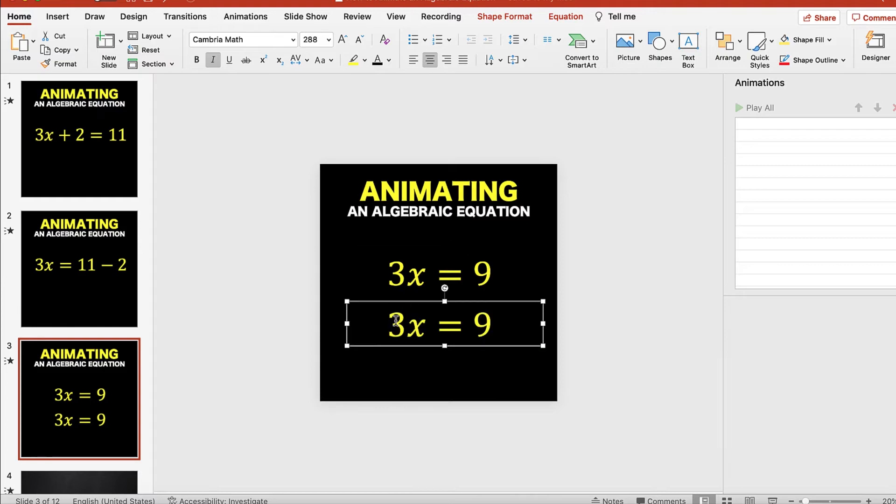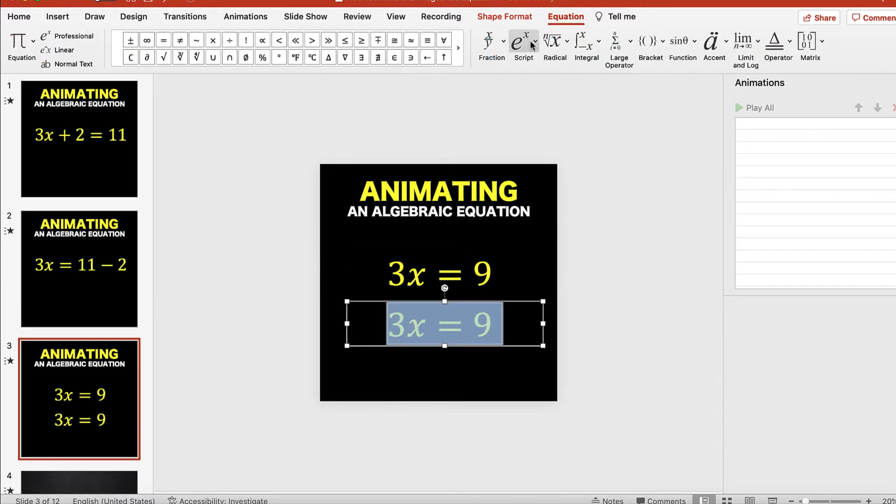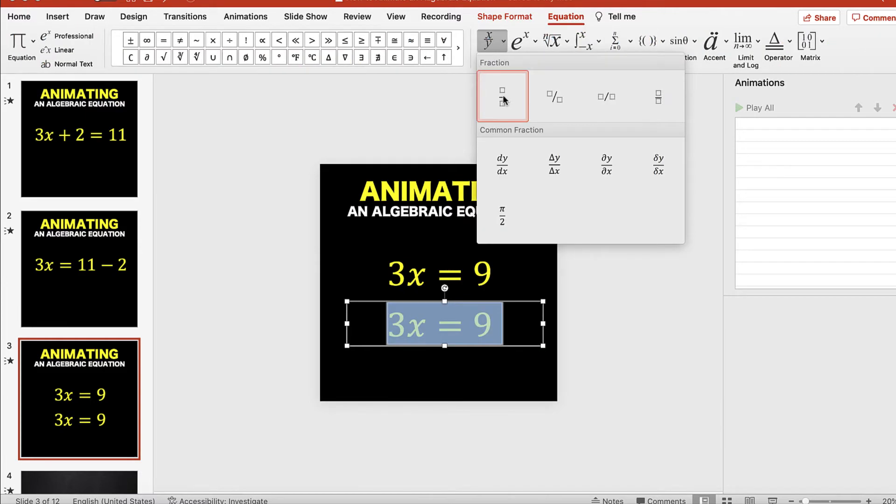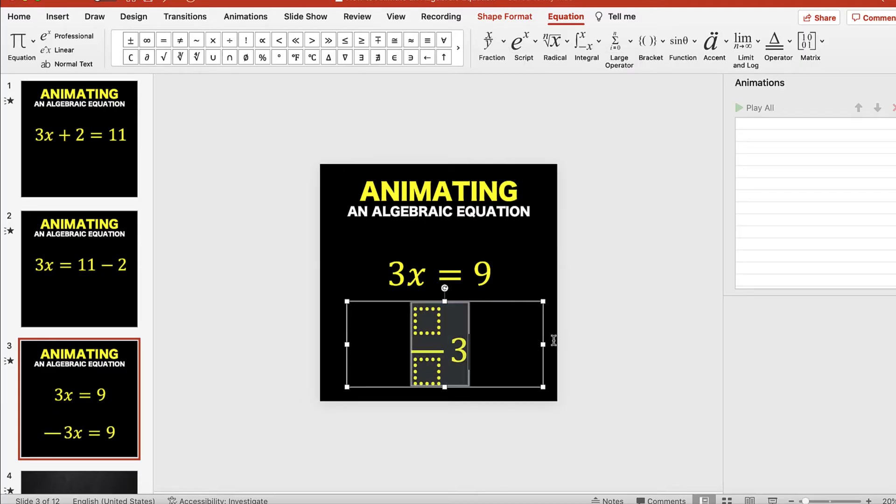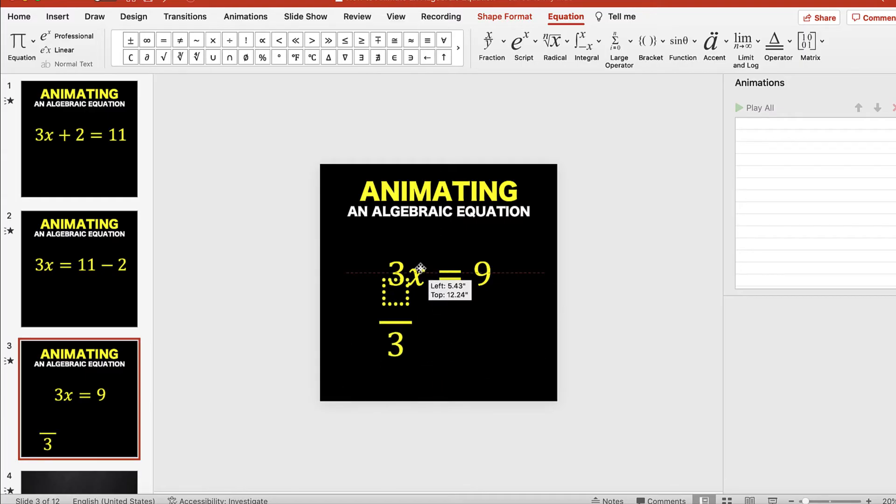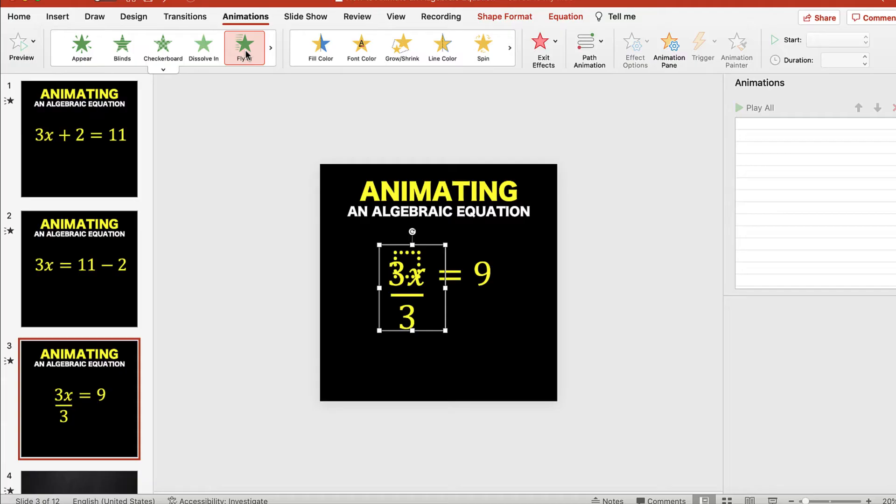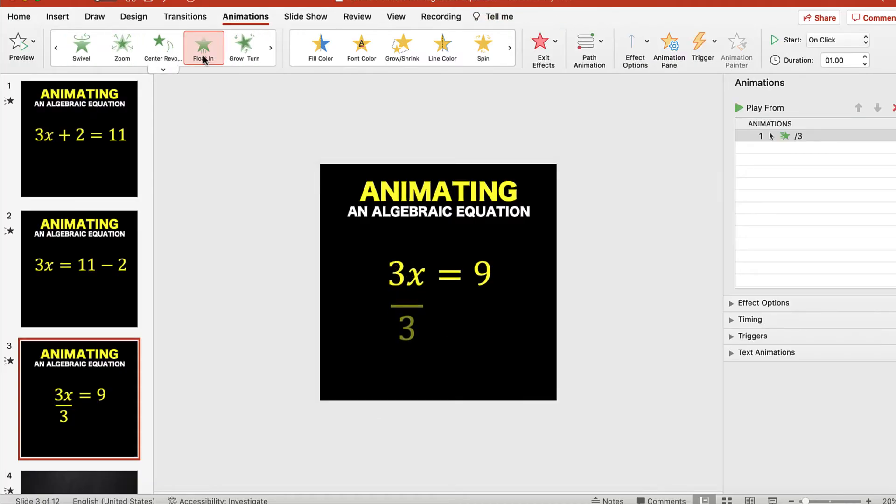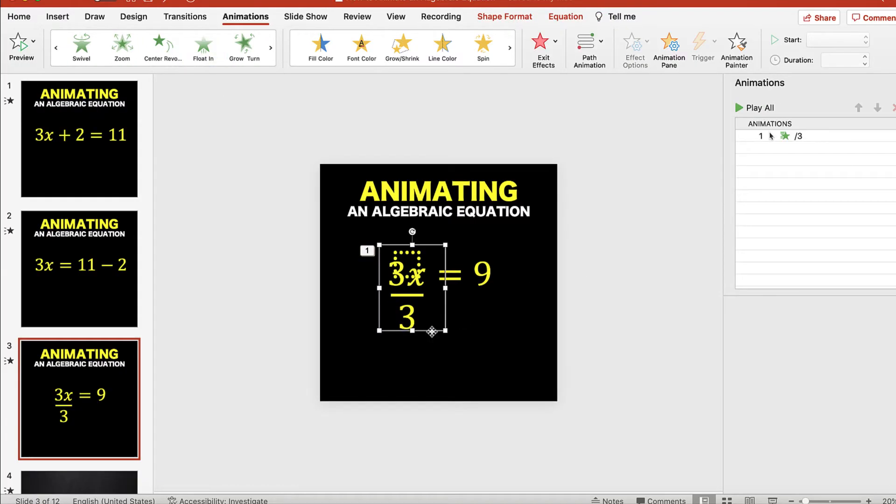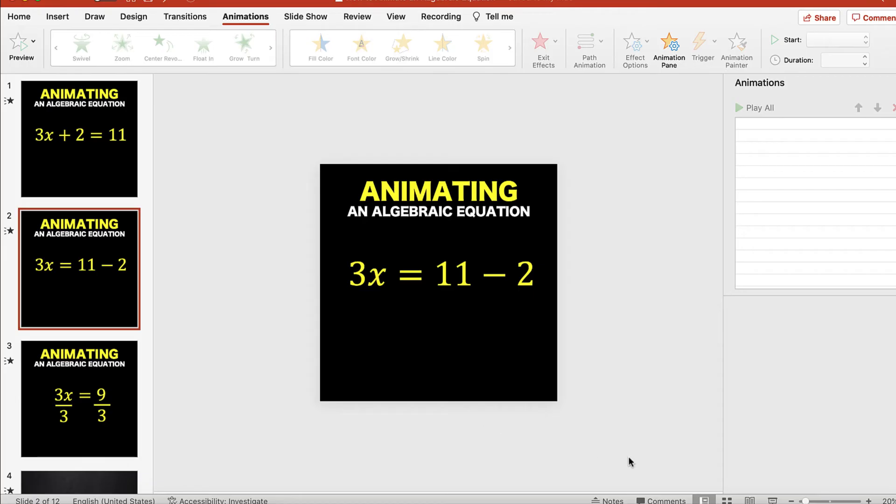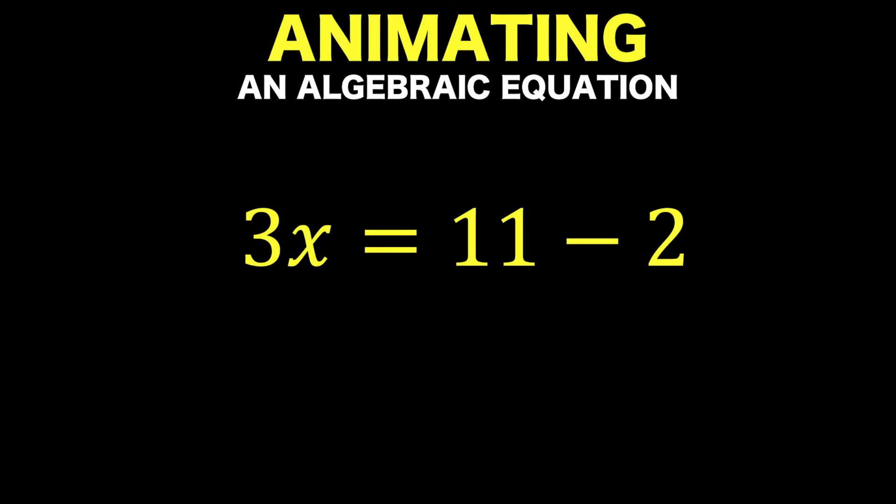Then the next step here is to divide both sides by 3. I duplicate this again, I copy, then I go to this equation. I want a fractional bar, so I selected this one. I'm going to divide by three both sides. I position that here and create some animation—let's say Float In. Then I do the same thing for the right side of the equation. I position it so that it lines up.